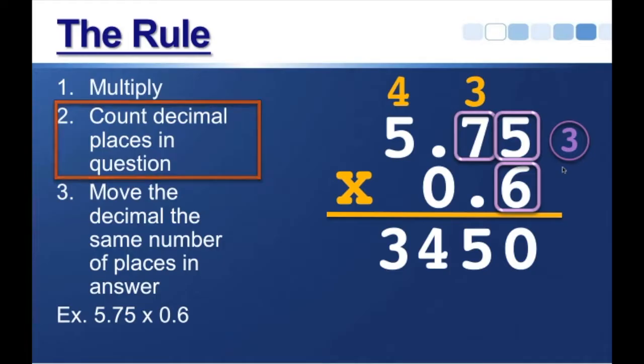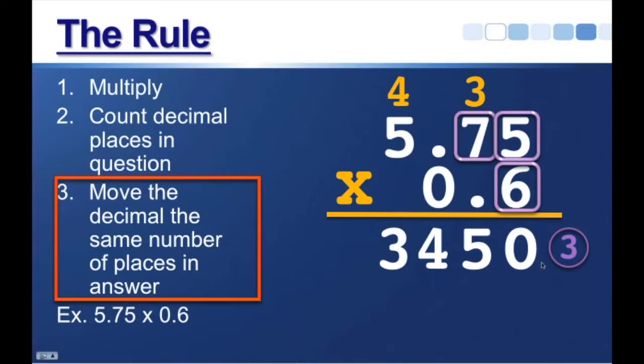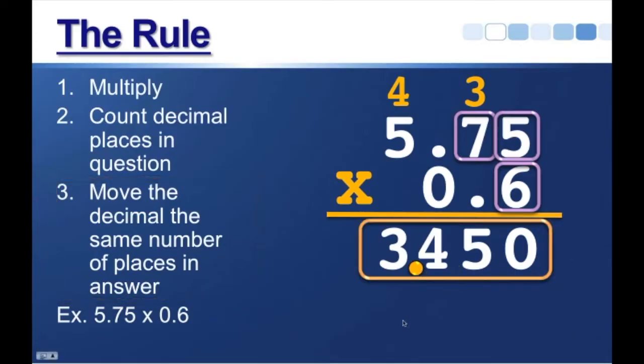Therefore, in our answer, we're going to move the decimal the same number of places. So we're going to start from here on the right, and then move our decimal three places. 1, 2, 3, place it there, so our answer is 3.450.